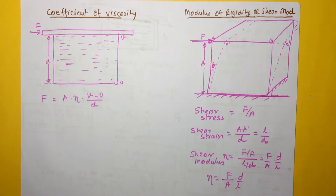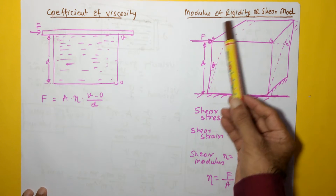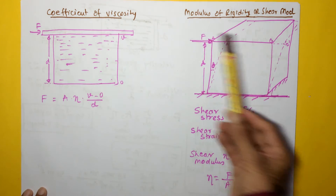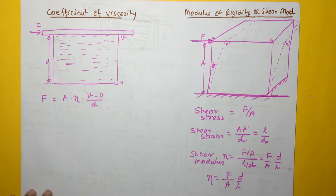In this video I am discussing a very interesting analogy between mechanics of solids and mechanics of fluids. I'm going to talk about two terms: one associated with solids — modulus of rigidity or shear modulus — and the other associated with liquids — coefficient of viscosity. There is a very interesting similarity between the two, and that is the point of discussion in this video.